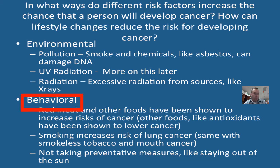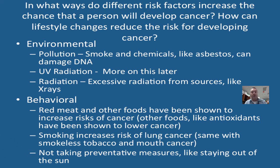Your behavior can also do a lot to prevent or increase your risk of getting cancer. For example, if you eat the typical American diet of a lot of red meat, that can increase your chances of colorectal cancer. Smoking is probably the best way to get lung cancer, and smokeless tobacco can lead to mouth and throat cancer. Staying out of the sun and using sunscreen will also prevent skin cancer.